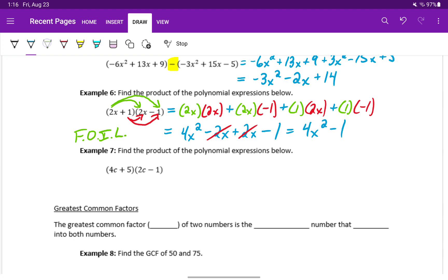Similarly in Example 7, we can start off by multiplying the first pair of values together. So we'll take 4c times 2c, plus the outside pair, 4c times negative 1, plus the inside pair, 5 times 2c, plus the last pair, 5 times negative 1.